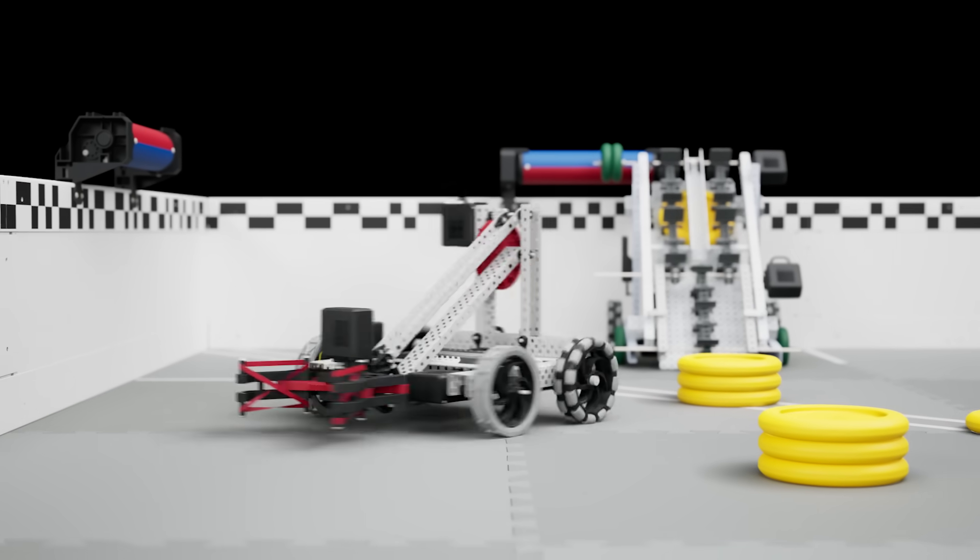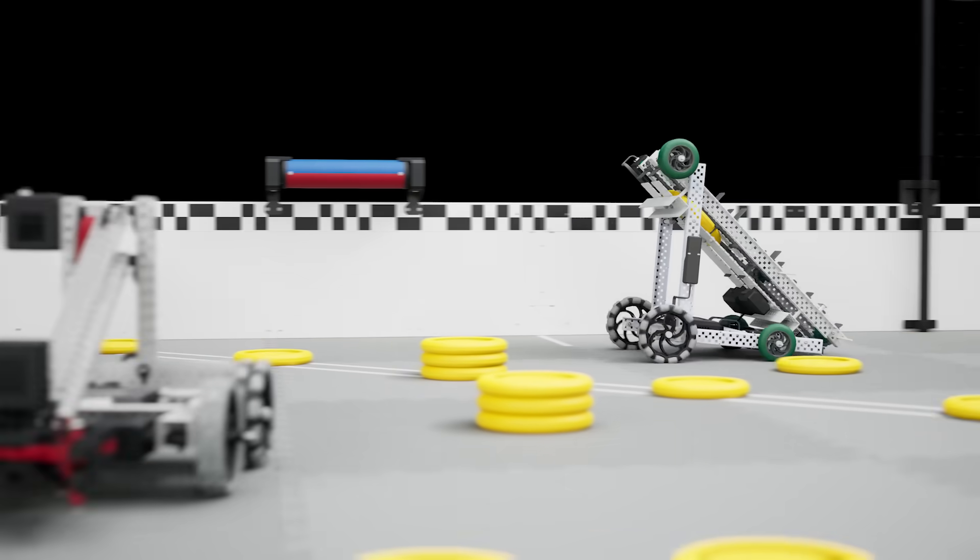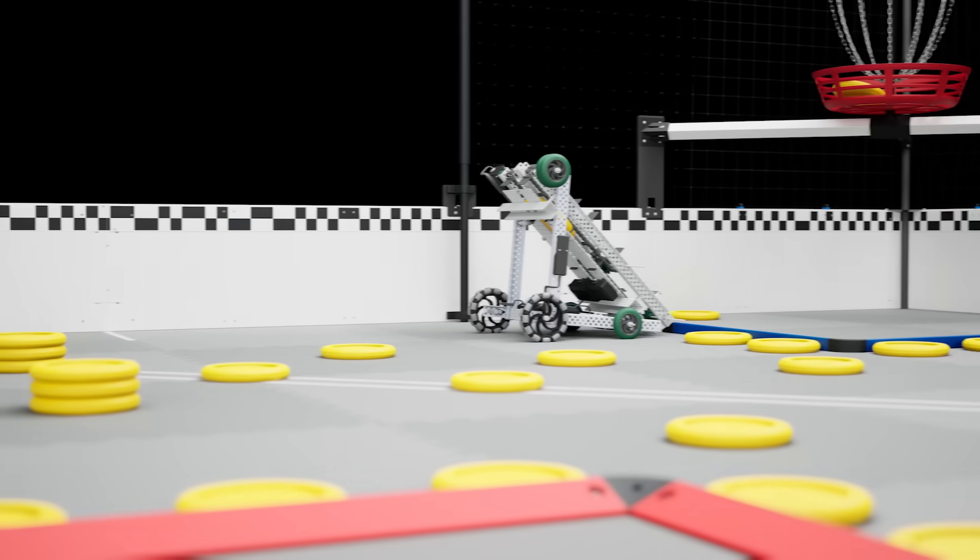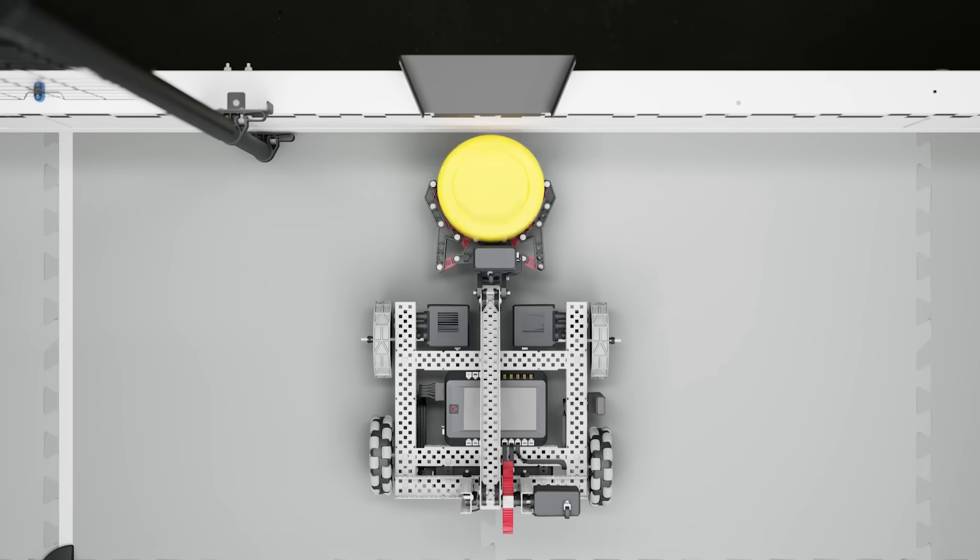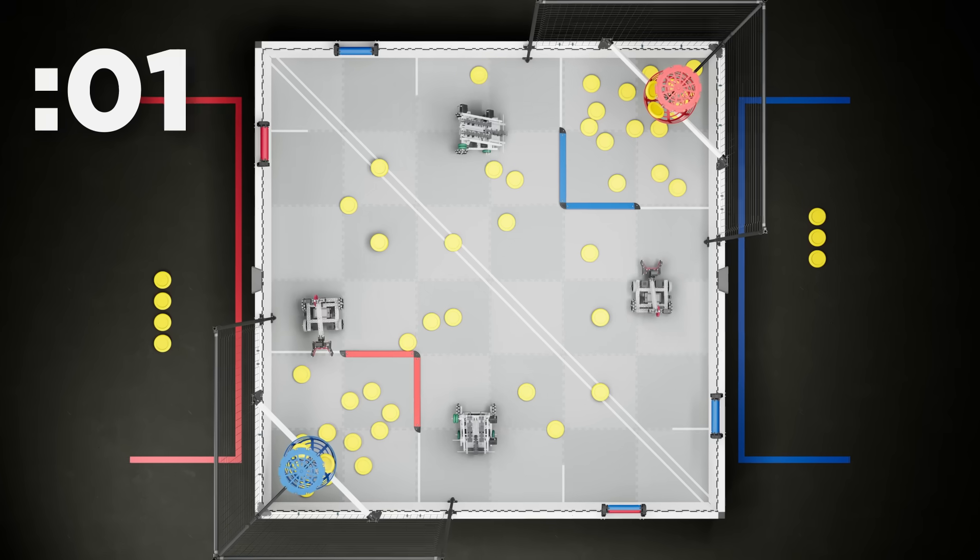The one-minute, 45-second driver control period begins once the autonomous bonus winner has been determined. During the driver control period, robots can pick up discs from the ground or receive match load discs through the loader.